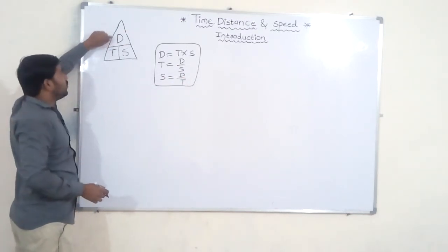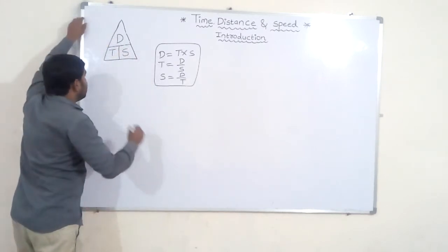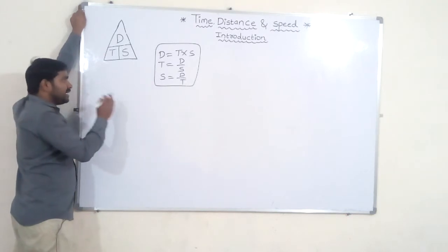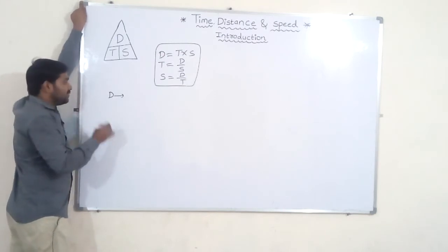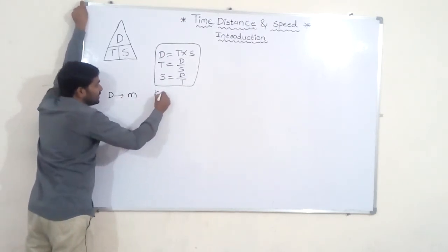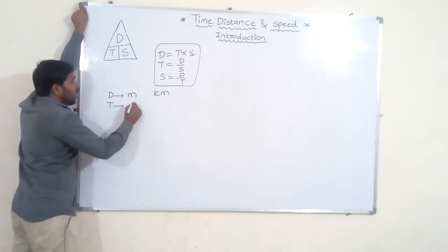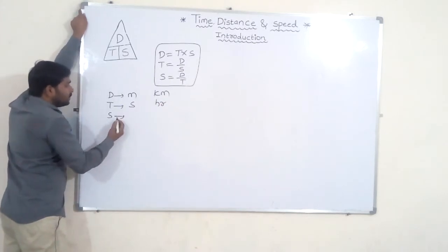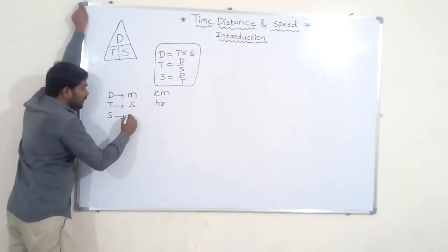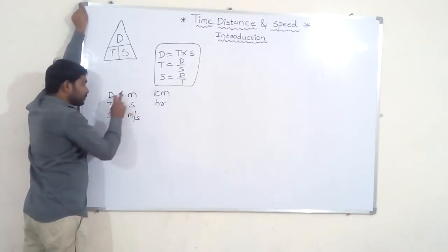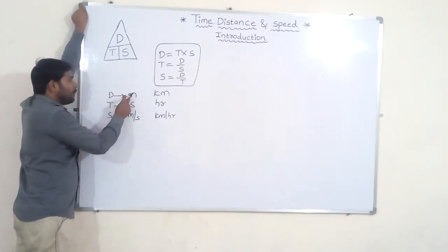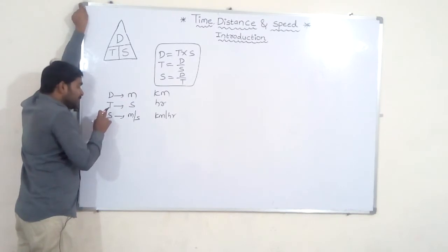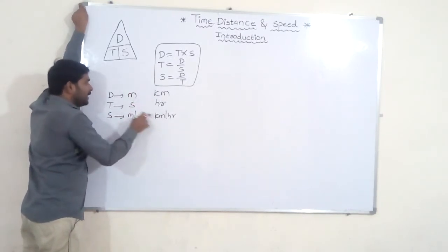These are the three formulas. Now, the units: distance units are meters (small units) and kilometers (large units). Time units are seconds and hours. Speed units are meters per second and kilometers per hour.